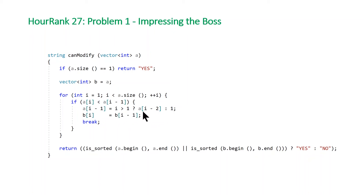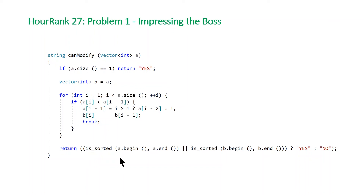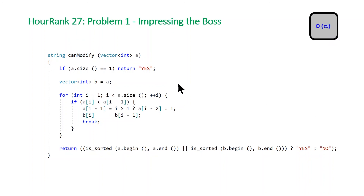We then make a modification to both A and B. For A, we modify the previous element and set it equal to the element before that — setting A[i-1] equal to A[i-2]. We check that i is greater than 1 to avoid going out of bounds; if i equals 1, we set it to the minimum value, which is 1. For B, it's simpler: we just set the current element equal to the previous element. Once we have both modified arrays, we use the STL is_sorted algorithm. If either A or B is sorted, we return 'yes'; otherwise, we return 'no.'